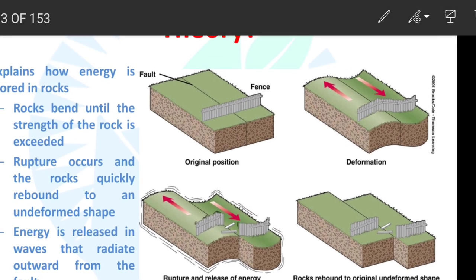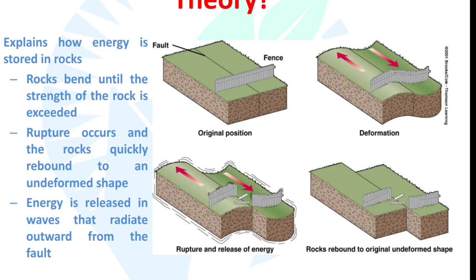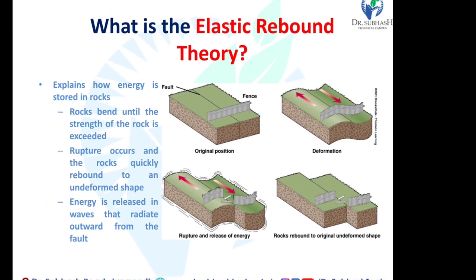In the first image, we see the origin position. Energy is stored up to the rock's strength limit, then deformation starts — you can see the direction of deformation. At the time of deformation, the fault line acts, as shown in the third figure: rupture releasing the energy. The rock releases energy in radial form toward the building, and in the last image the rock rebounds to the original undeformed shape. You can see the fault line and the different rock positions in the first and fourth images.